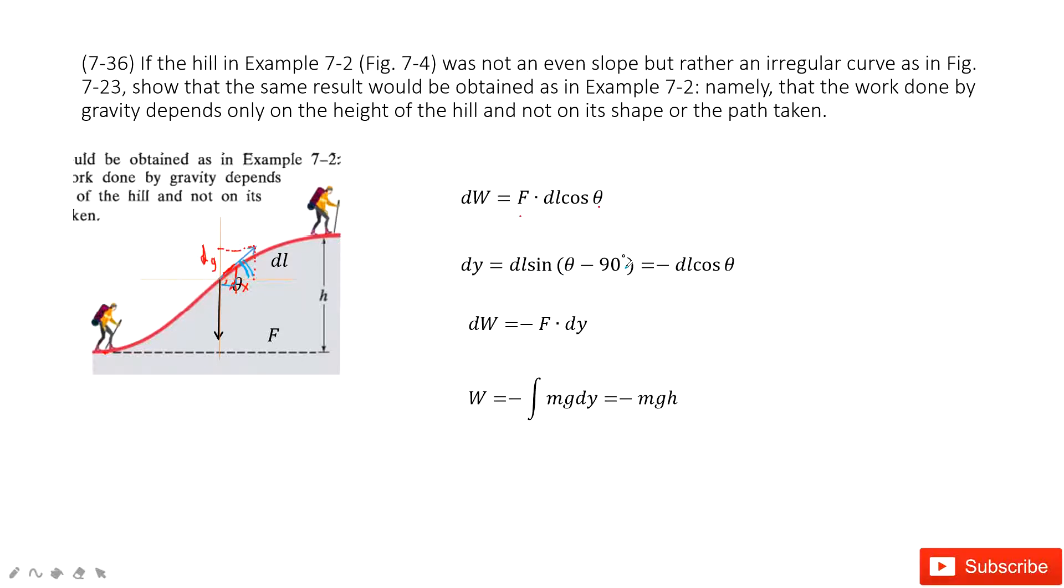So in this one, we get dy. And then we can just simplify this equation. Sine of theta minus 90 degrees is negative dl cosine theta. Agree? Yes. Now we input dl cosine theta inside. We get this term just equal to negative dy.